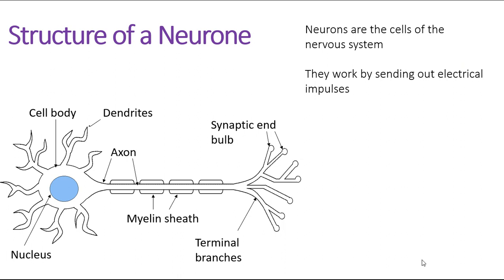As we talk about the function and structures of the nervous system, the cells or the functional unit are the neurons. There are different types of neurons which we will take a look at. They are arranged slightly differently but will all have the same basic features, and they work on the basis of sending out electrical impulses in order for different regions of the body to be able to communicate with each other.